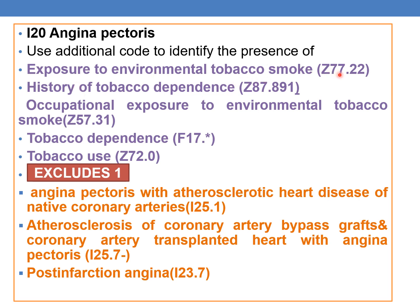Additional codes required with angina pectoris coding include: history of tobacco dependence Z87.891, occupational exposure to environmental tobacco smoke Z57.31, tobacco dependence from subcategory F17, and tobacco use Z72.0. These codes must be used additionally when present along with angina pectoris.